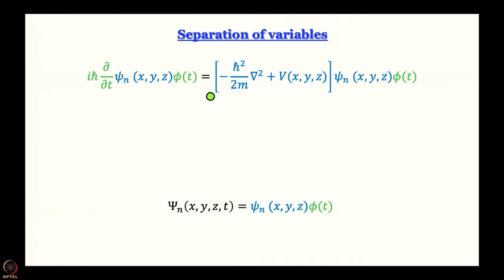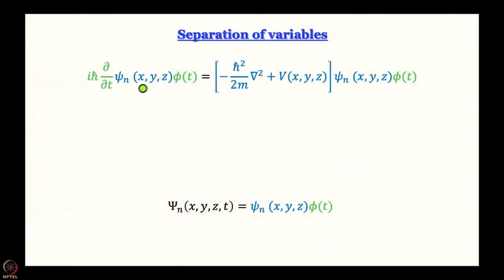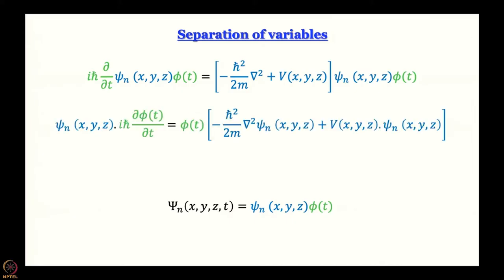Not only do the wave functions have space and time-dependent parts, the operators also have one time-dependent and one space-dependent component, and our job is to separate them out. It is not very difficult: iħ ∂/∂t, the time-dependent operator, is going to act only on φ(t), the time-dependent wave function, and the space-dependent operator is going to operate only on the space-dependent part. From the left-hand side we can take ψₙ(x,y,z) out, and on the right-hand side we can take φ(t) out.